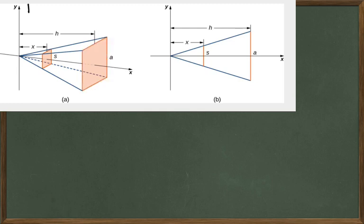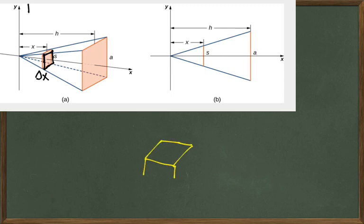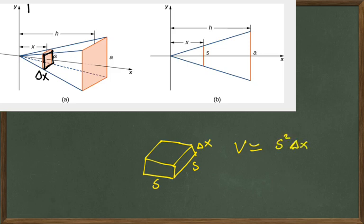The idea we're going to use to determine this is we're going to make almost a box, but not quite. We'll choose something real close and give it a width of delta x. So roughly this shape is going to be a box — a square with a height of delta x. Your volume is going to be s squared times delta x. We'll do a partition and get a whole bunch of these boxes to approximate the volume, then let delta x go to zero to get a better and better approximation.